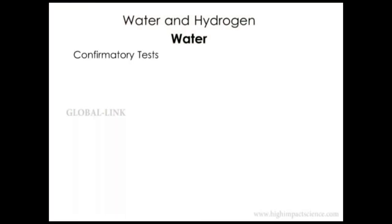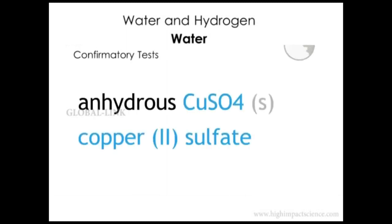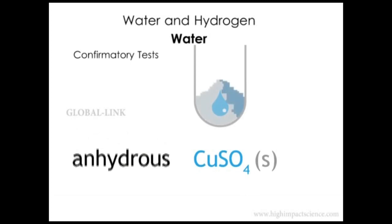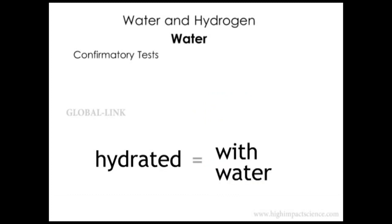There are two common methods of testing for water. These methods only test for the presence of water and not its purity. The first method involves the use of anhydrous copper(II) sulfate, which is a white solid. The term anhydrous means without water. In the presence of water, it becomes hydrated copper(II) sulfate, which is blue in color. Hydrated means with water.